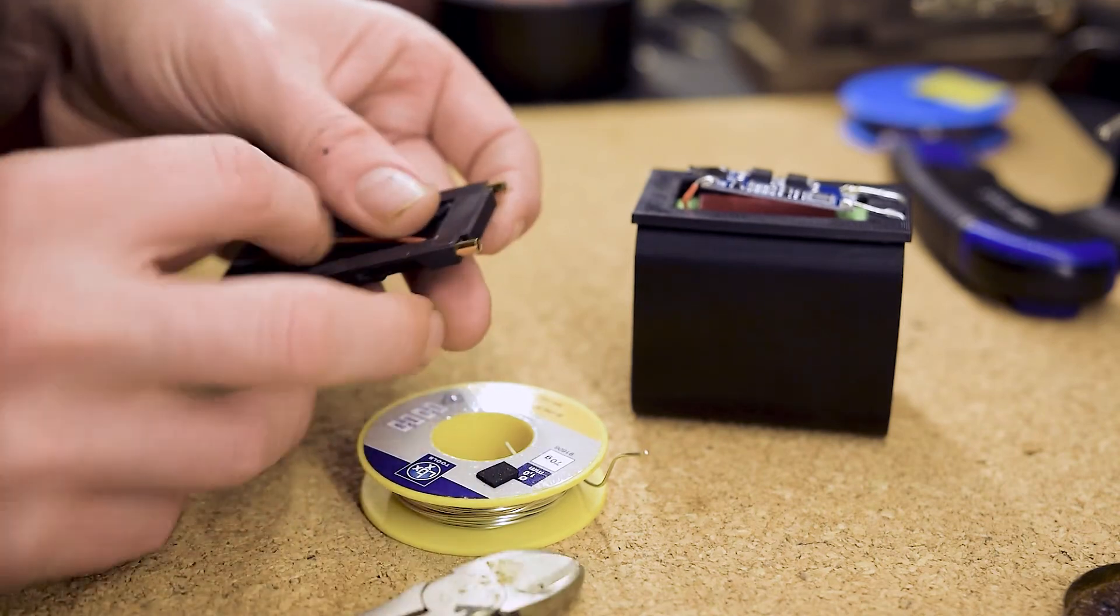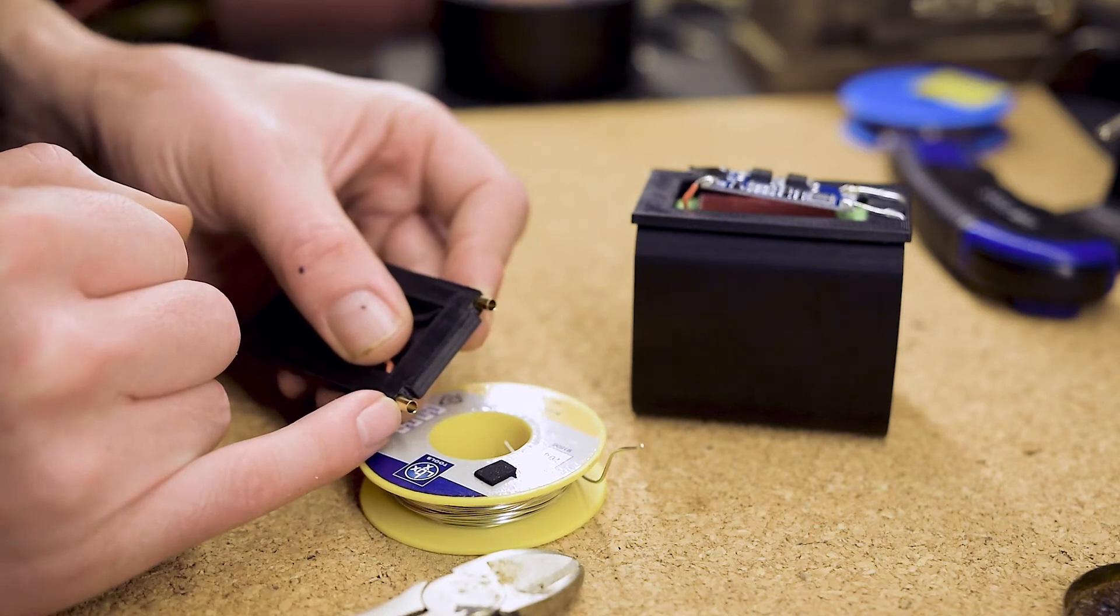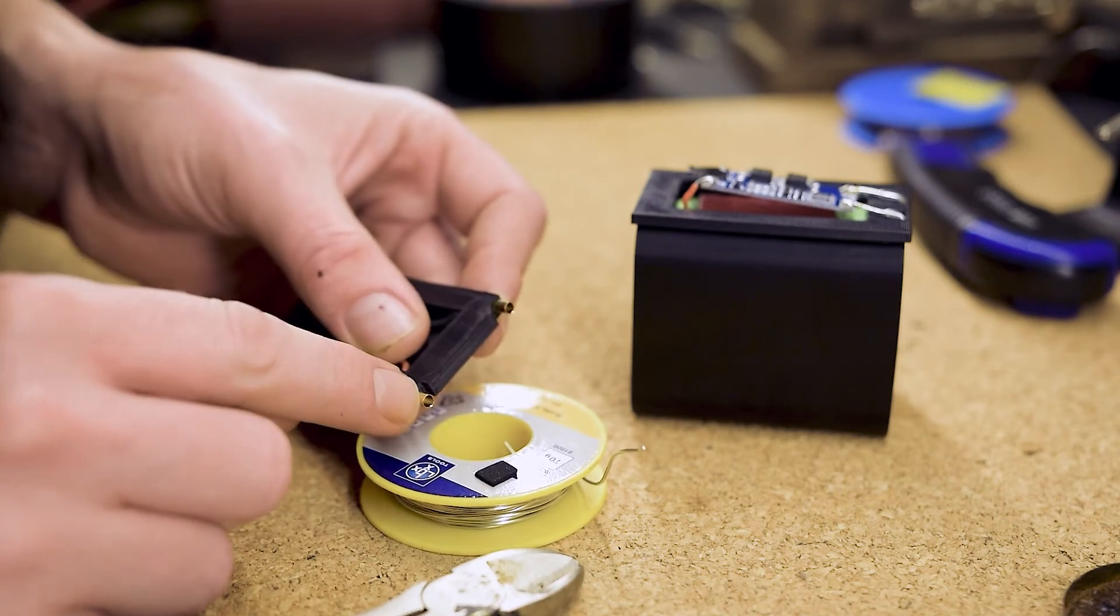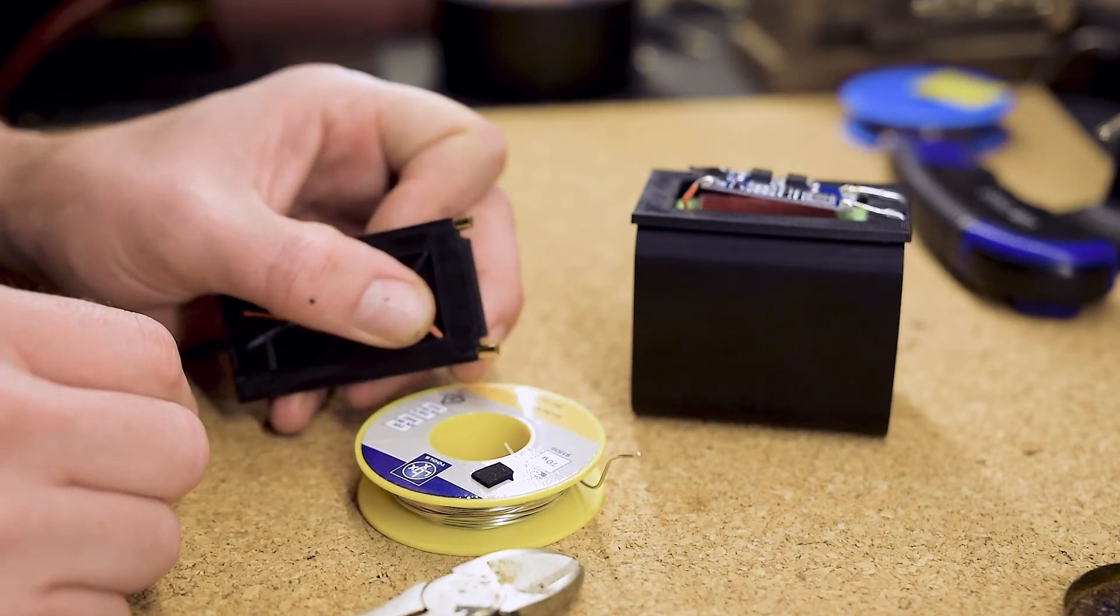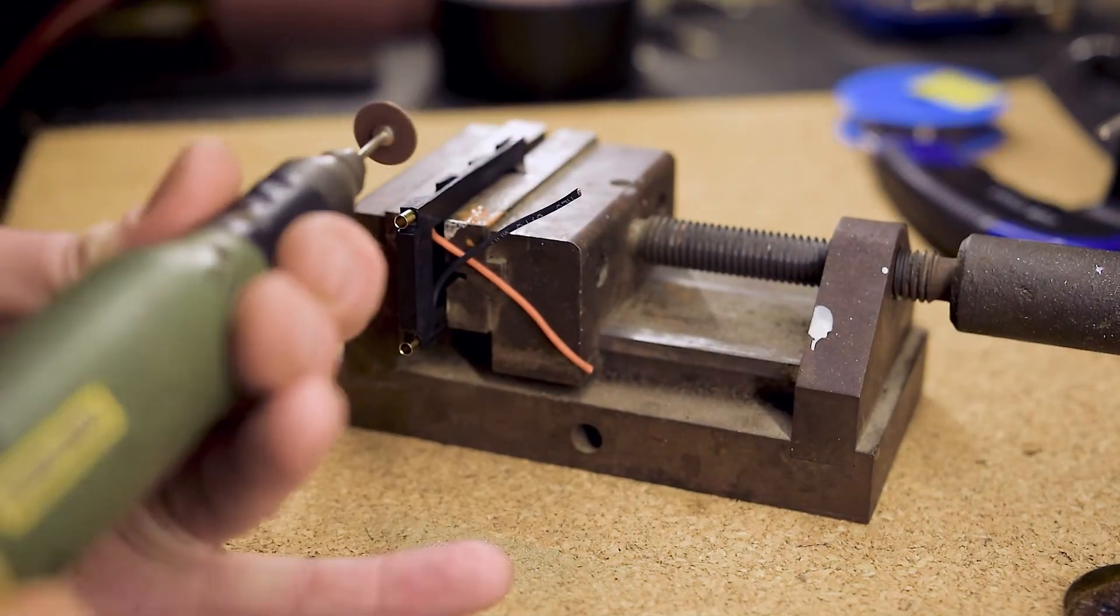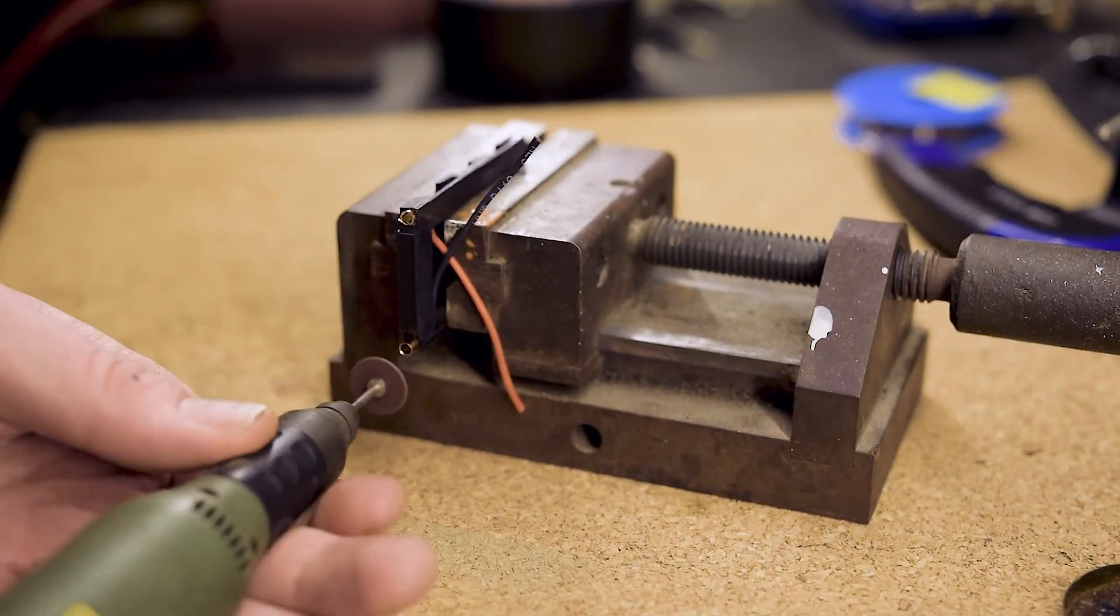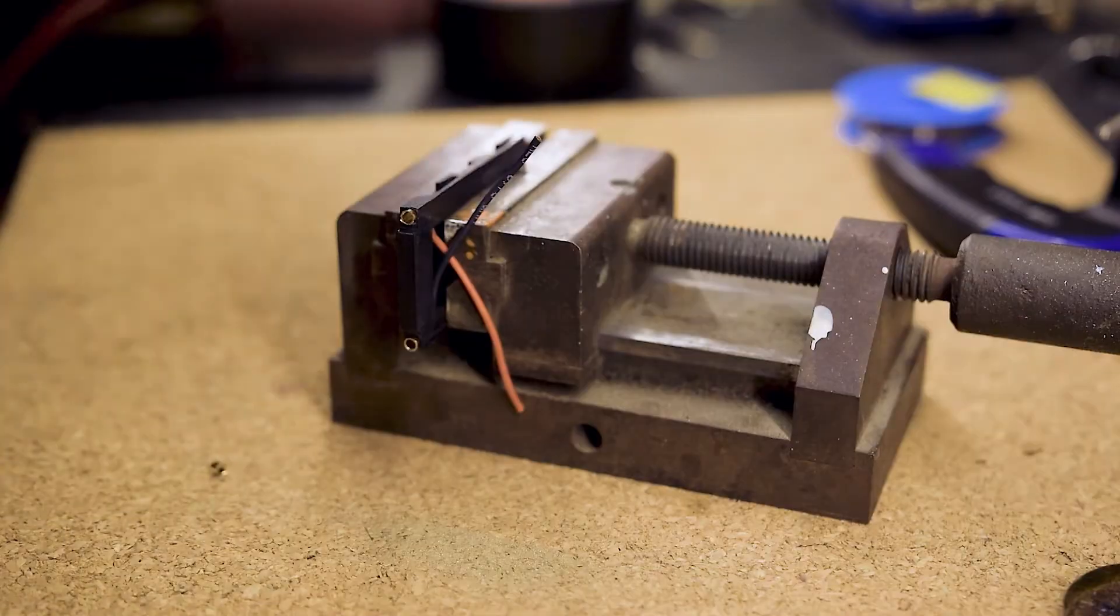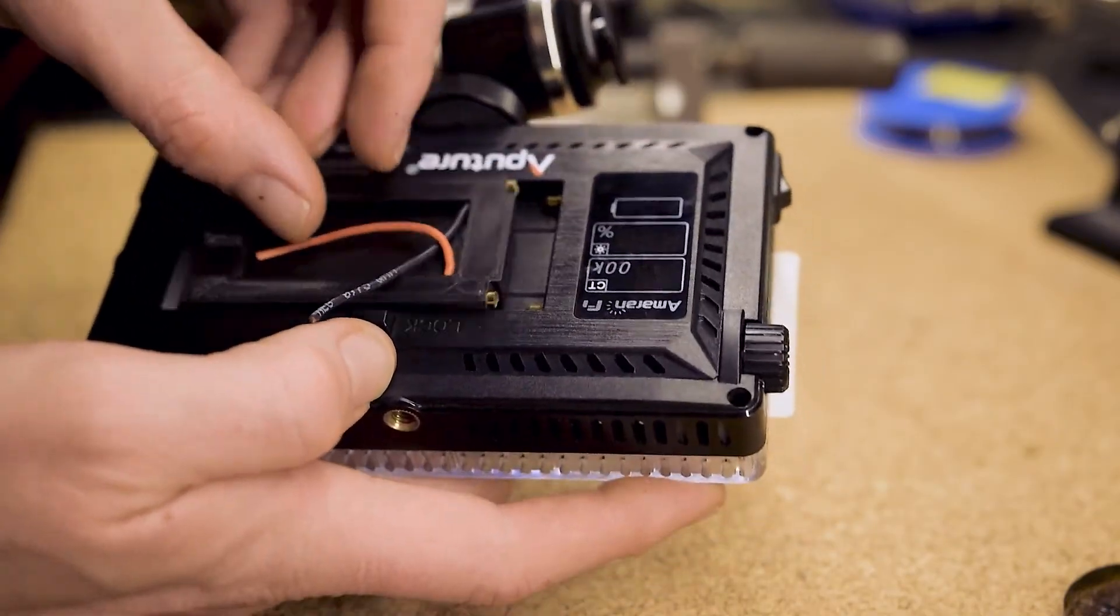When done, we fix the base plate in a vise and cut the connectors to the right length. The piece poking out must be one, either two millimeters long. Before we continue further, we check the fitment of the lower base plate against the battery slot of our device. A video light in my case.